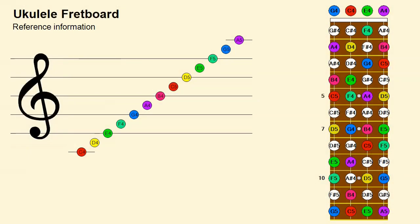The display shows the notes on the fretboard of a 12-string ukulele and their location on the staff. This is a very convenient reference. This video provides a method for locating and identifying these notes in case you do not have it.